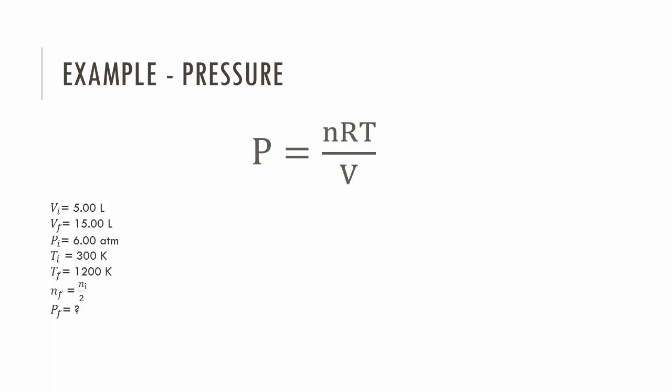We solve this problem by analyzing one change at a time. Looking first at volume, we see that passing from 5 liters to 15 liters triples the volume. Since volume and pressure are inversely proportional, we must divide the pressure by 3. Then we multiply the temperature by 4. Since temperature and pressure are directly proportional, we do the same to the pressure.